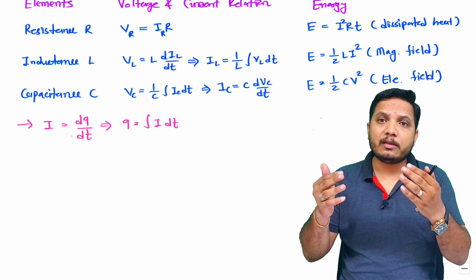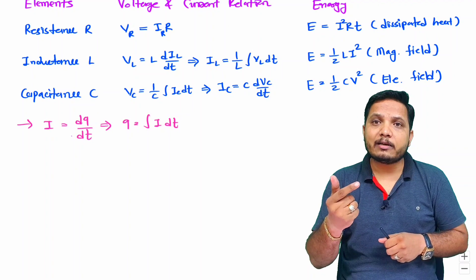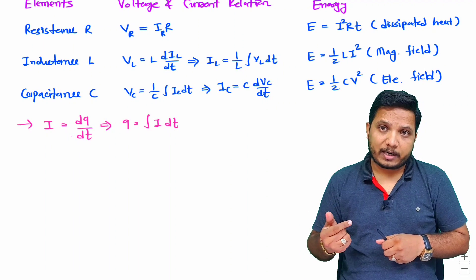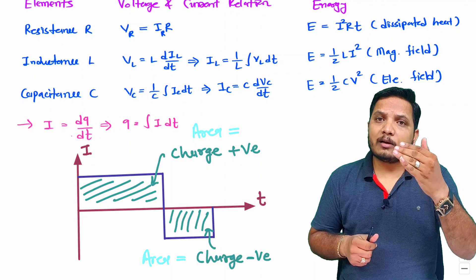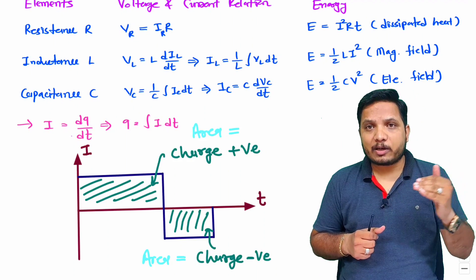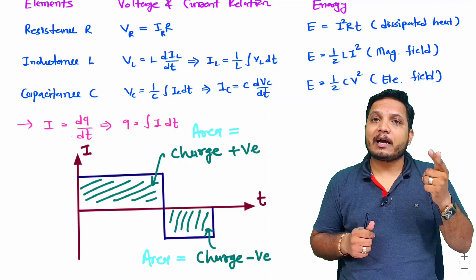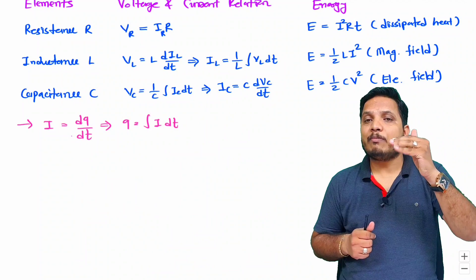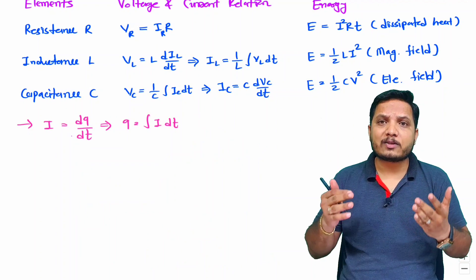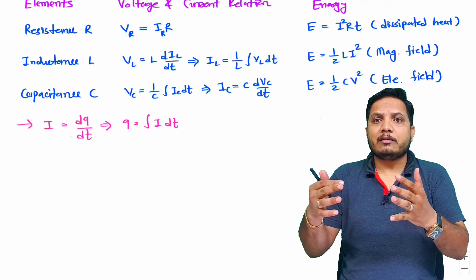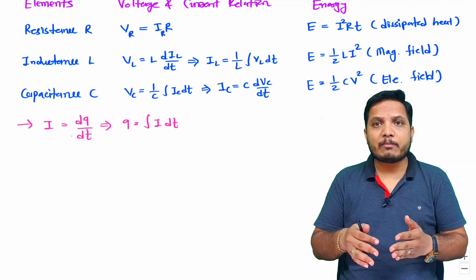There can also be questions where you are given waveforms of current and need to calculate charge. To calculate charge from a current waveform, integrate current with respect to time — or equivalently, calculate the area intercepted by the waveform with respect to the time axis. Area in the upper half is positive charge and area in the lower half is negative charge. Examples in the next few videos will further clarify how to solve these types of questions. I hope you found this video helpful; place any queries in the comment box.